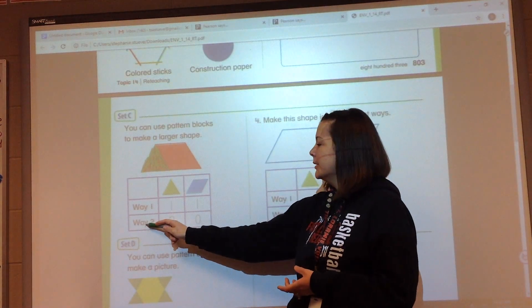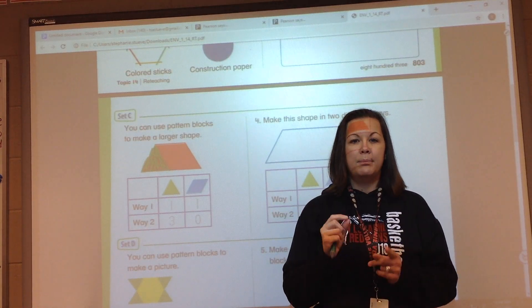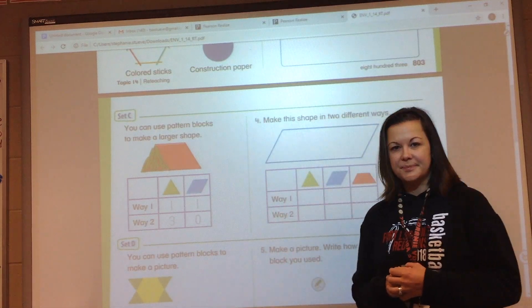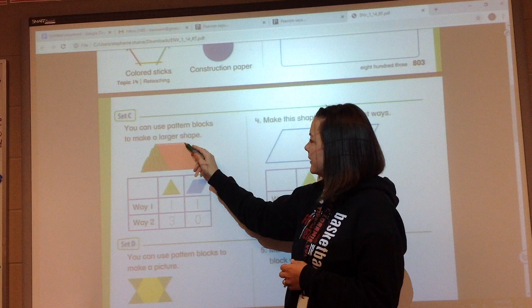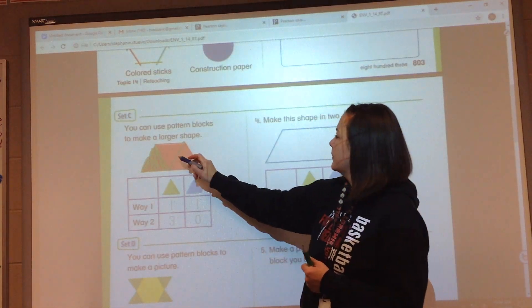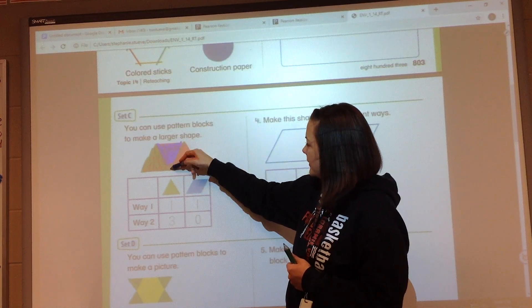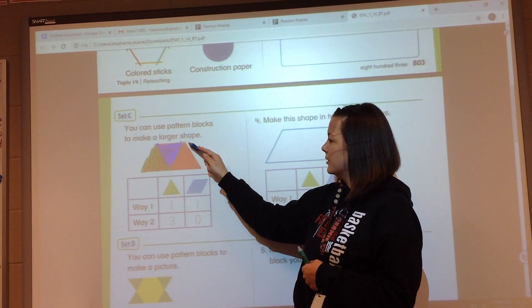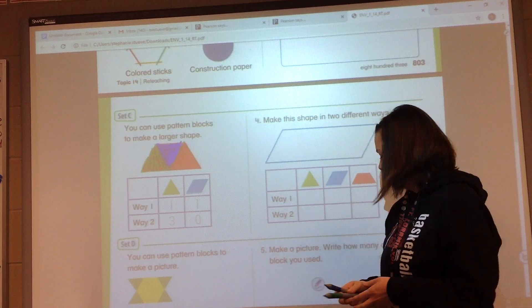Way two says three triangles. I want you to take a minute, pause the video, and then put three triangles on top and see how you make that. All right, you should have made it like this, and I'll color my triangles different colors so you can see. So we have the green triangle, the blue triangle, and the red triangle, one, two, three, to make that trapezoid.